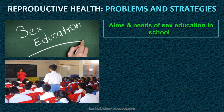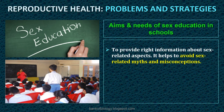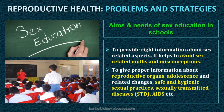Aims and Needs of Sex Education in Schools: 1. Provide right information about sex-related aspects. It helps to avoid sex-related myths and misconceptions. 2. Give proper information about reproductive organs, adolescence and related changes, safe and hygienic sexual practices. 3. Sexually transmitted diseases, or STDs, AIDS, etc.